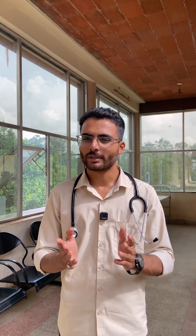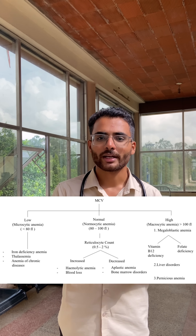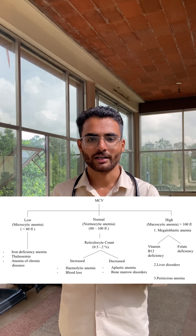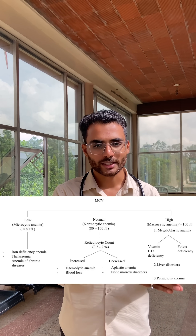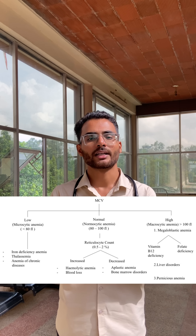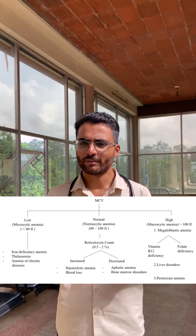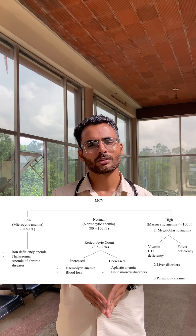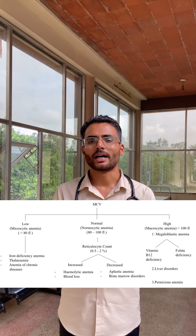MCV is simply the size of the RBC. Its normal range is 80 to 100 fL. If it is low, it is called microcytic anemia. If it is high, it is called macrocytic anemia. And if it is normal, it is called normocytic anemia.